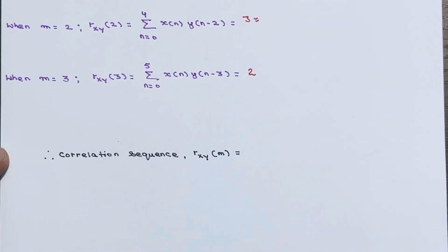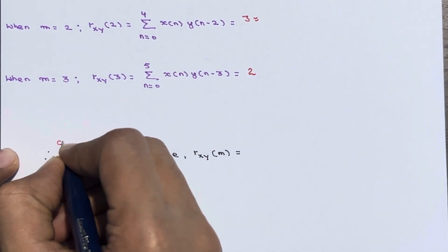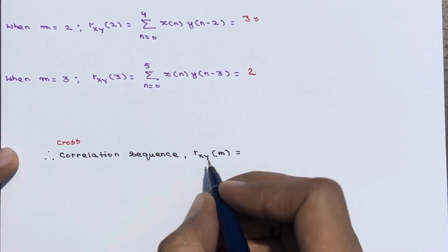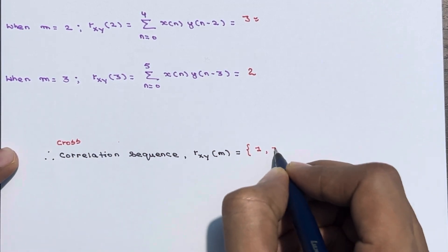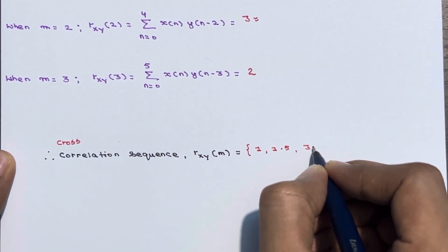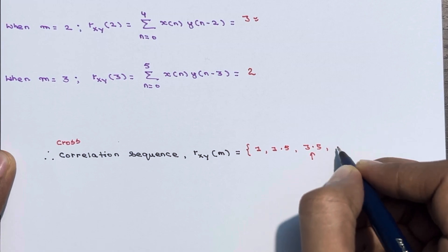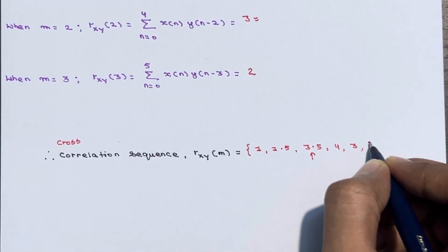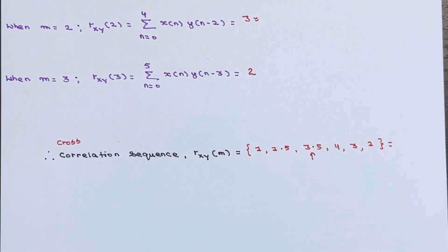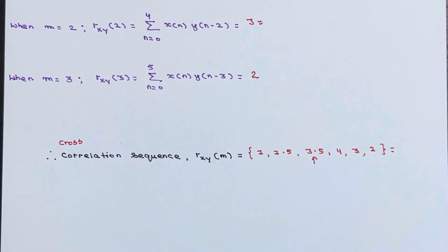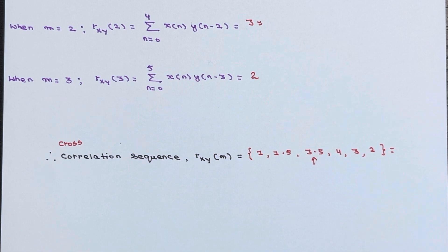So the overall cross-correlation sequence rxy(m) is: {1, 1.5, 3.5, 4, 3, 2}, where the arrow indicating m = 0 is at 3.5. This is how you perform correlation using the tabular method — the same concept applies everywhere. If you still have any doubt, you can ask in the comment section. Thanks for watching.